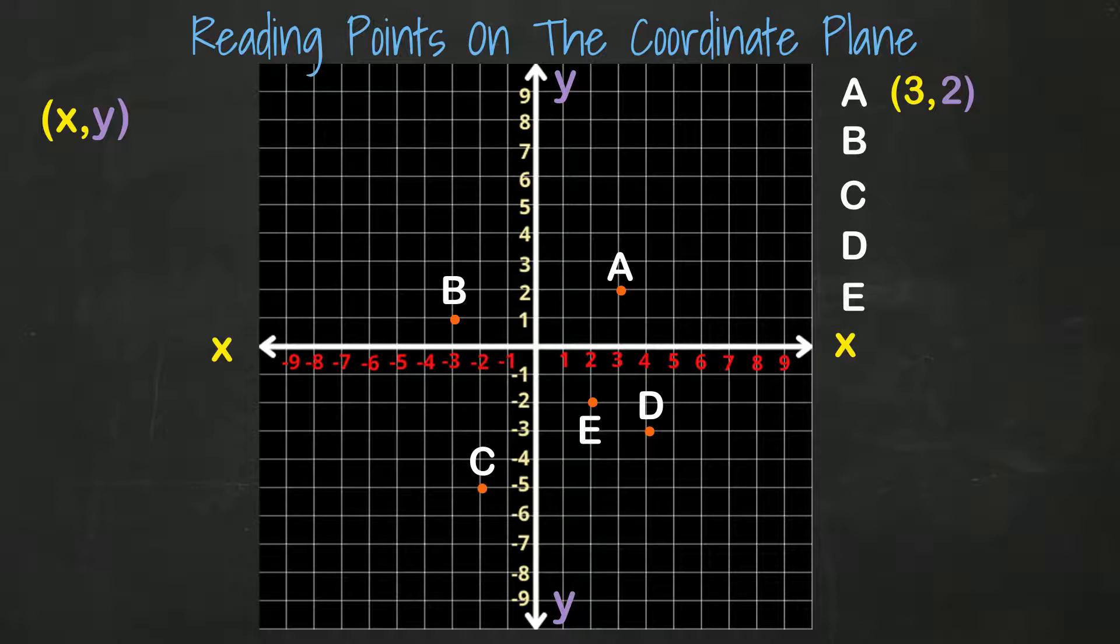Let's find the coordinates for point B. Starting at the origin, we can see we need to move to the left three spaces. From there, point B is up one. We would write the coordinates for this point as negative three and one.